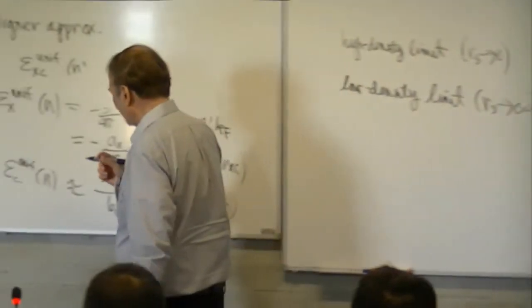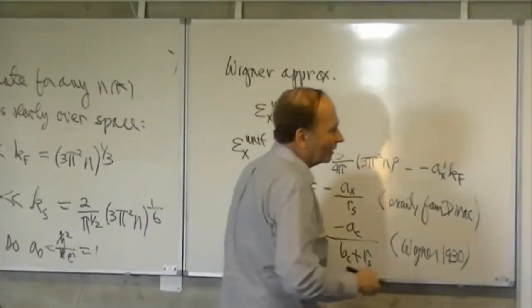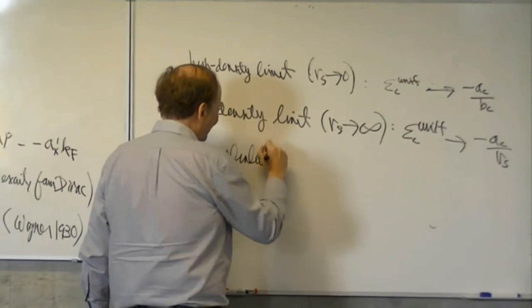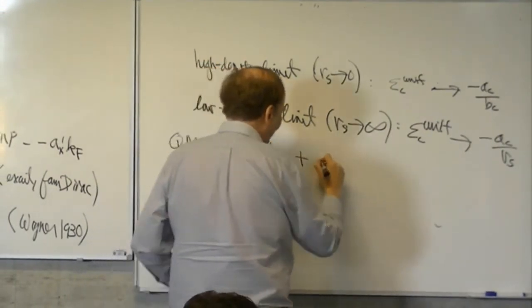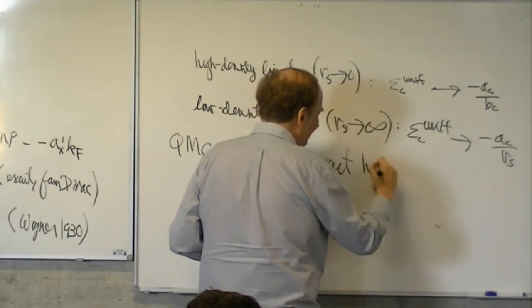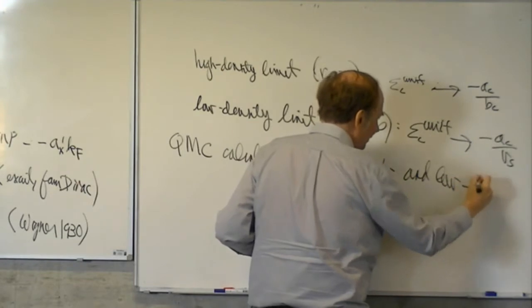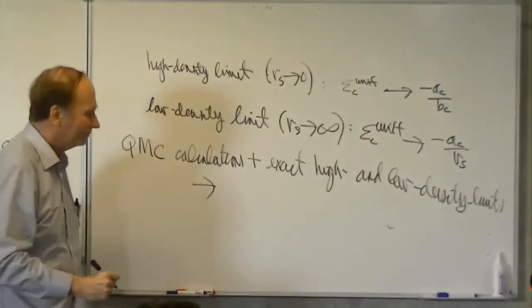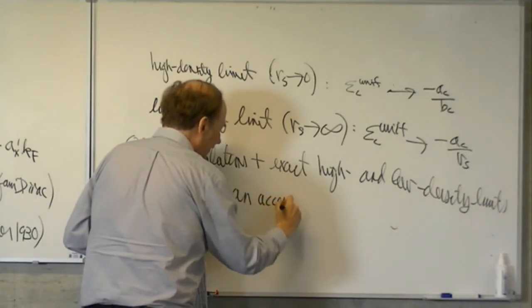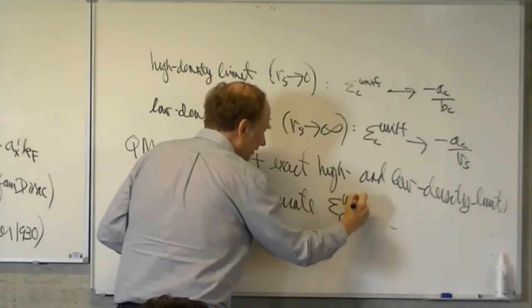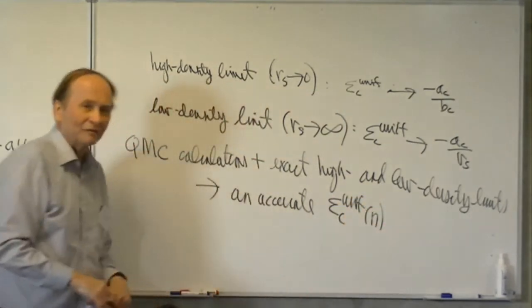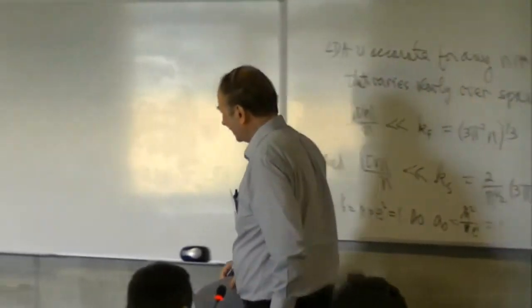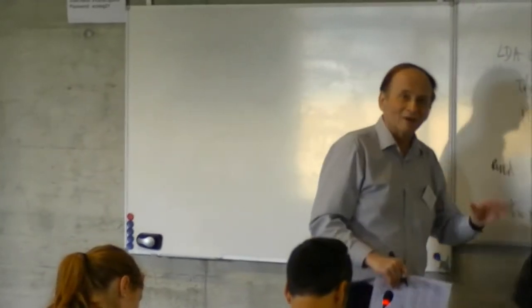We now have much better formulas for epsilon_c-uniform that come from Monte Carlo calculations plus exact limits, giving us an accurate epsilon_c-uniform. There are a lot of different analytic parameterizations for this function, and they are all essentially equivalent if they are properly representing the actual interacting electron gas.